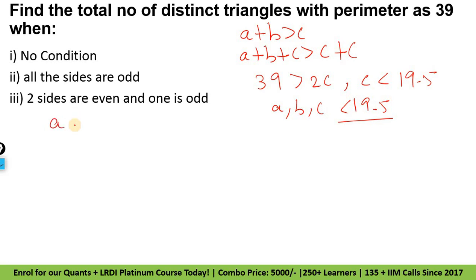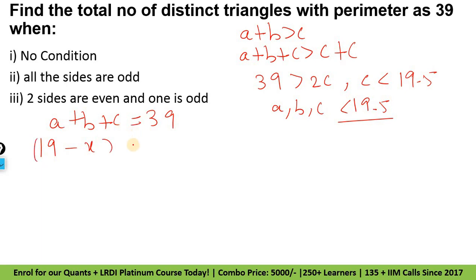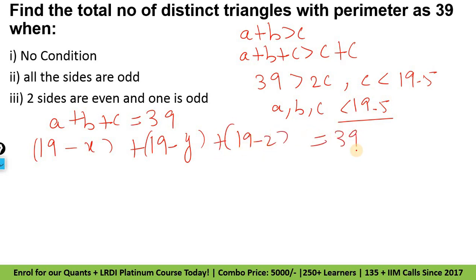A plus b plus c = 39. Yahaan pe a, b, c — 19.5 se kam. Toh yahaan pe c, a, b ke liye variable maan lete hain: a ko maan lo 19.5 minus x, b ko maan lo 19.5 minus y, and c ko maan lo 19.5 minus z. Is equal to 39. Toh x, y, z — zero bhi ho sakta hai. Aur maximum 19 le sakte hain.